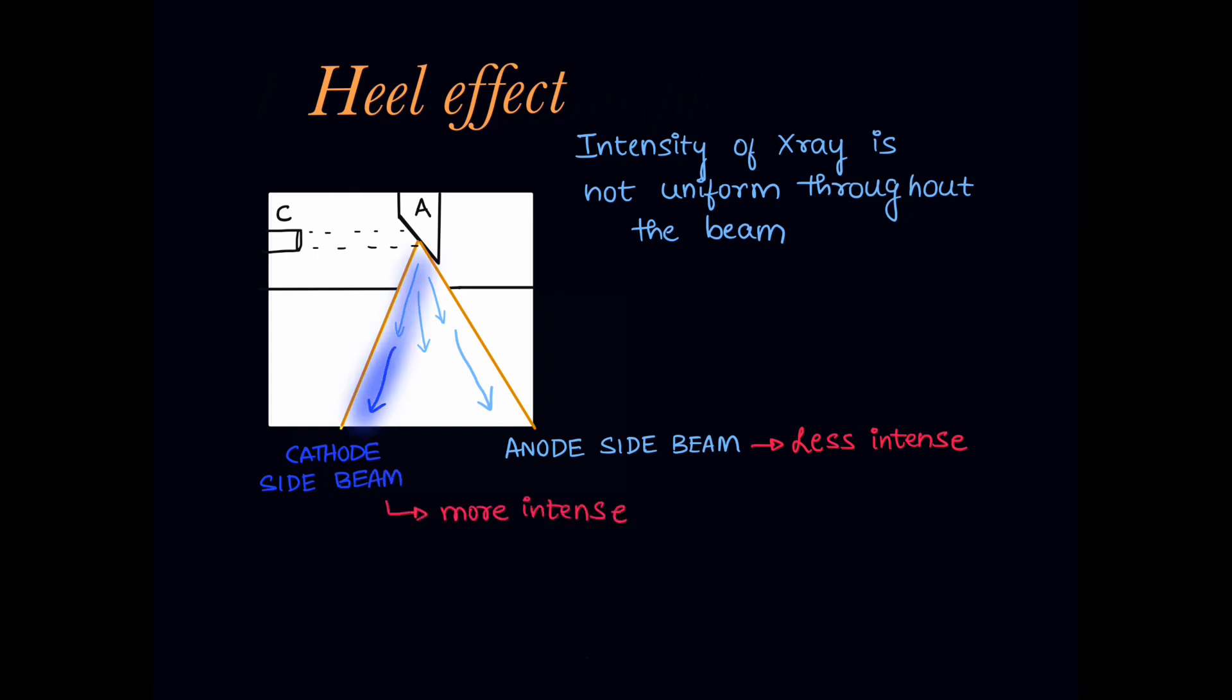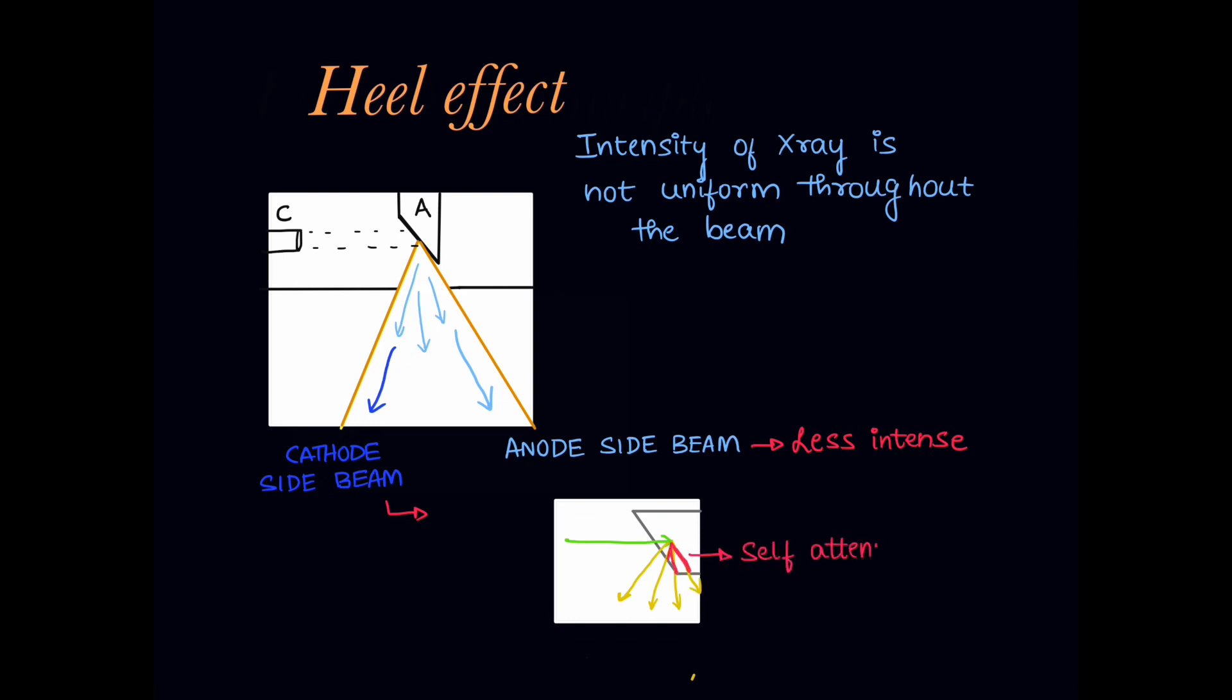The strength or quality of the x-ray beam produced will look something like this, more intense towards cathode side and less intense towards anode side. The reason for this being self-attenuation of the primary x-ray beam produced by the anode itself that makes it less intense towards anode side and more intense towards the cathode side.